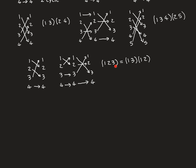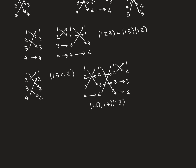So we can write (1 2 3) = (1 2) composed with (1 3), where (1 2) is applied first. Now as another example, let's take a 4-cycle: 1 goes to 3, 3 goes to 4, 4 goes to 2, and 2 goes to 1, which we write as (1 3 4 2).